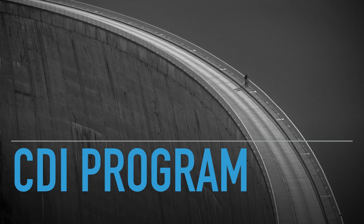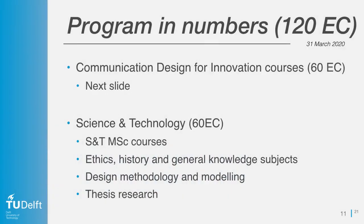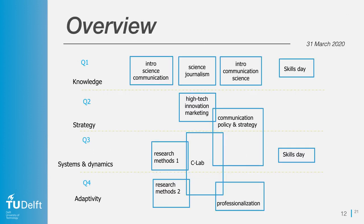Now, a little bit more about the program. In the first quarter, we focus on knowledge courses — knowledge about science communication and communication itself, and a basic course on journalism. In the second quarter, we have more strategic communication courses: one around policy and strategy, and one around marketing. The third and fourth quarters have a larger focus on research and communication design itself. A large case in the Communication Lab, or C-lab, revolves around a real-life case for which you will design a communication-based solution for a case owner. In parallel, the research methods courses prepare you for your graduation project in the second year.